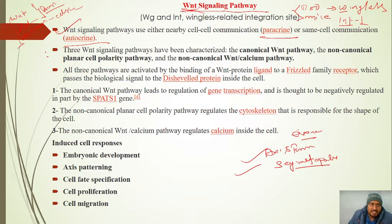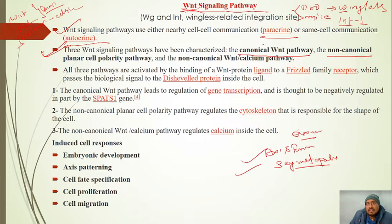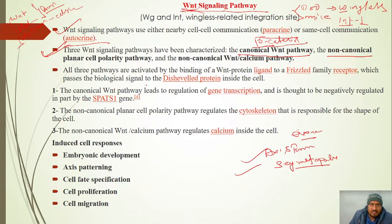There are three types of WNT signalling pathway. This is very important. The first is the canonical WNT pathway, where beta-catenin, a cytosolic protein, is stabilized and regulated. The second is the non-canonical pathway, where beta-catenin does not play a role. This is the key difference between canonical and non-canonical WNT pathways.